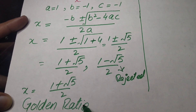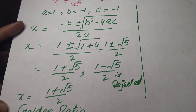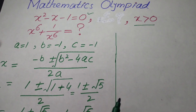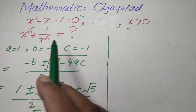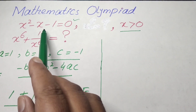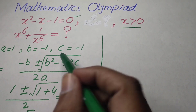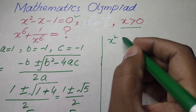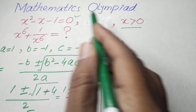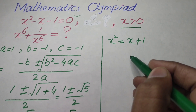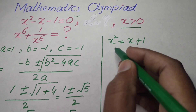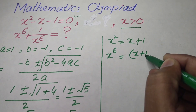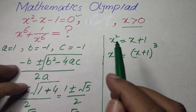Now we will solve the given expression and find the value of x⁶ + 1/x⁶. From the original equation x² − x − 1 = 0, we derive that x² = x + 1. We then take the cube of both sides, so the left side becomes x⁶ and the right side becomes (x + 1)³.